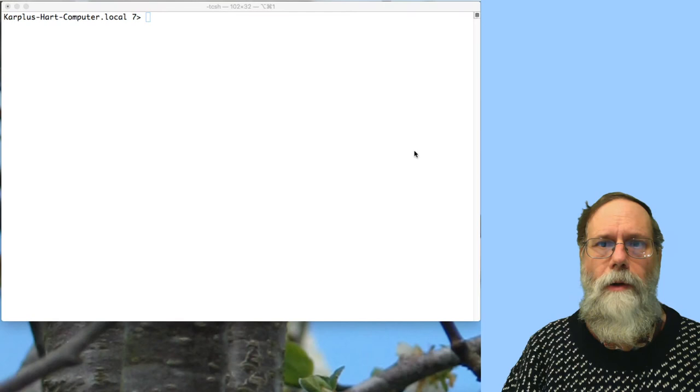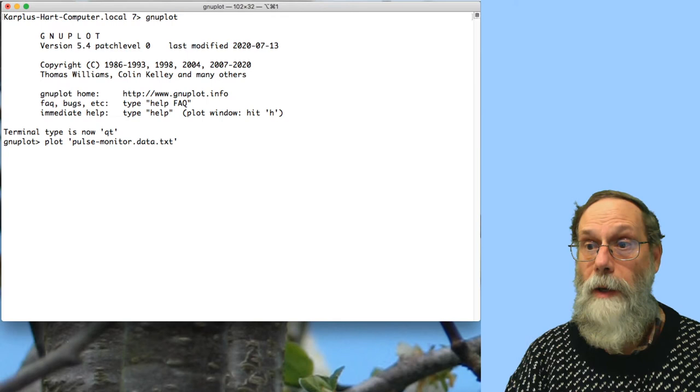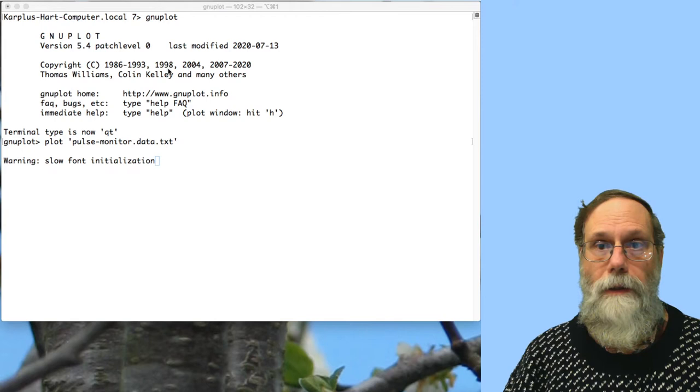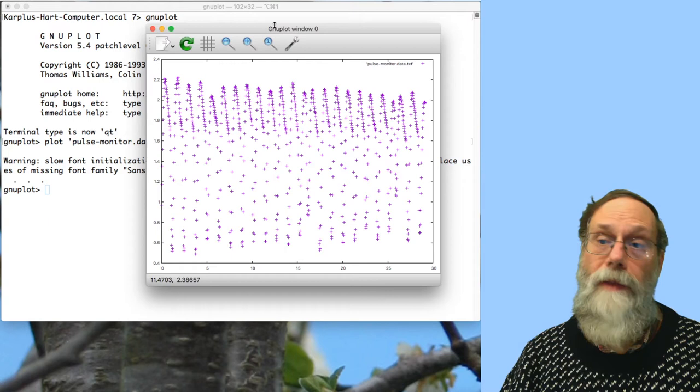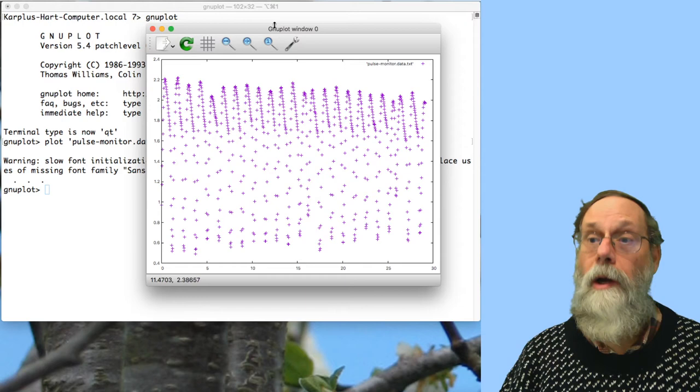I'm going to do a new plot here. What I'm going to plot is some data from a pulse monitor, but it could just as easily have been from band-passed blood pressure measurements or from an EKG. When that comes up, you can see it looks like a mess, and that's because the sampling rate here was 30 times a second, so it's hard to see which points go with which points. A scatter diagram is not really what we want here.